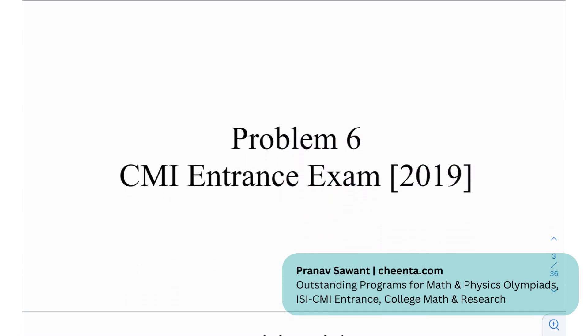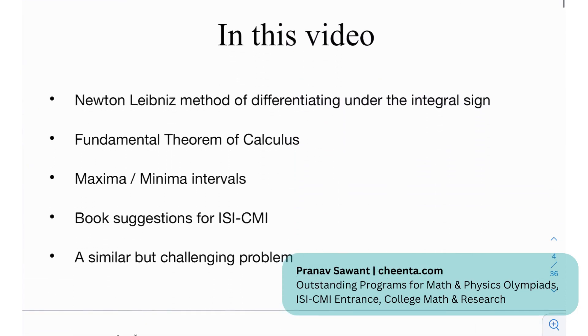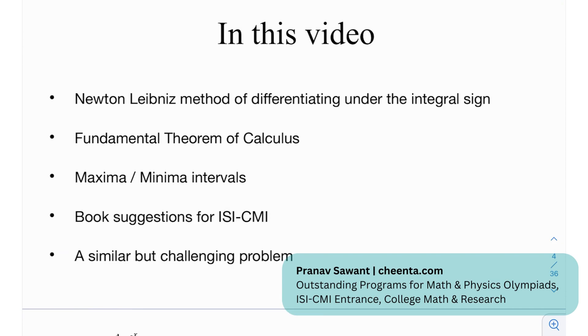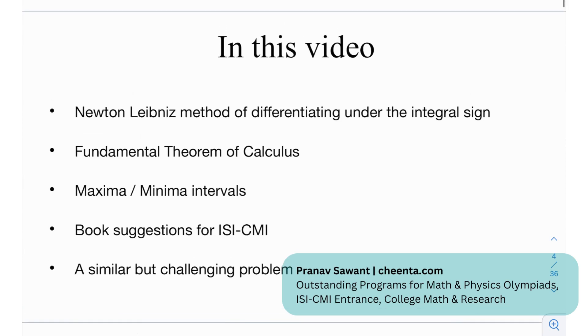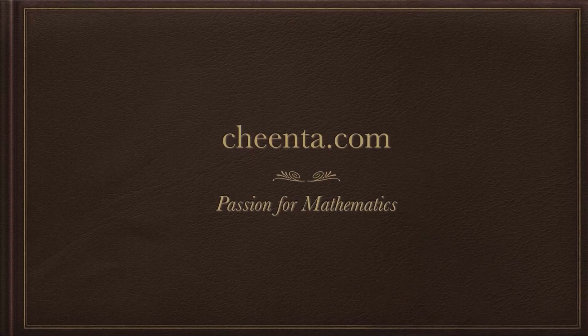Now this is problem number six from the CMI entrance exam in 2019 and in this video we're going to learn the Newton-Leibniz method of differentiating under the integral sign, then we have the fundamental theorem of calculus, then we have certain maxima and minima intervals, how to calculate maxima and minima basically and after that we have book suggestions for ISI-CMI and at the end a similar but challenging problem. This video is sponsored by Cheenta.com.